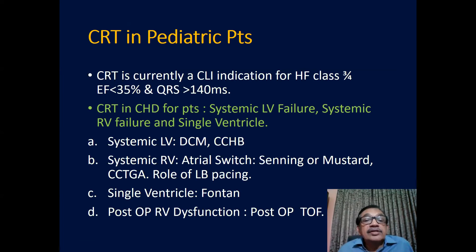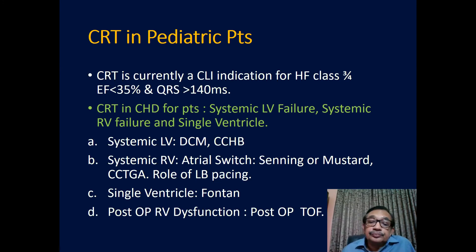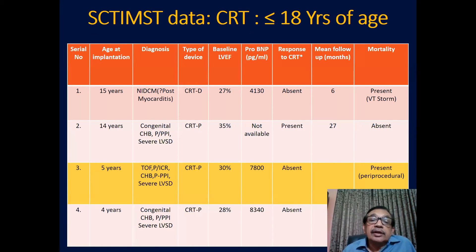Looking at CRT in pediatric patients, CRT is currently a Class 1 indication for heart failure Class 3 or 4, ejection fraction less than 35%, and left bundle branch block with a QRS duration of more than 140 milliseconds. It is indicated in systemic LV dysfunction typified by dilated cardiomyopathy or congenital complete heart block, systemic RV dysfunction in situations like atrial switch with Senning or Mustard or corrected TGA, and single ventricle situations like post-Fontan or post-op RV dysfunction typified by post-op tetralogy. Our CRT data under 18 years had about four or five patients; indications were non-ischemic cardiomyopathy, congenital complete heart block, post-op tetralogy, and a single ventricle.